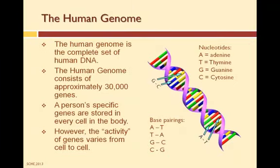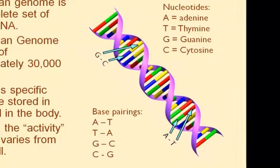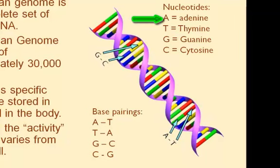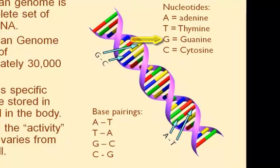Just in case you're wondering what exactly a gene is, let's talk briefly about the human genome. The human genome is a set of genetic information identified by specific DNA sequences. This graphic illustrates a DNA molecule and its base pairings. A base pair consists of two of four nucleotides: adenine (A), illustrated in green; thymine (T), illustrated in red; guanine (G), in yellow; and cytosine (C), in blue.